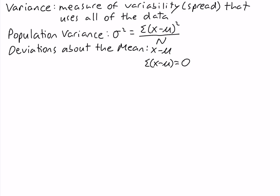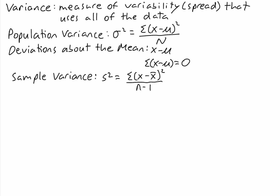If we're working with a sample of data, we want to use the sample variance, which we write as s squared, and it's almost the same formula. It's the sum of x minus x bar, the sample mean, squared, but instead of dividing by N, we divide by n minus 1. That's the main difference between the population variance and the sample variance: in the population variance we divide by N, and in the sample variance we divide by n minus 1.